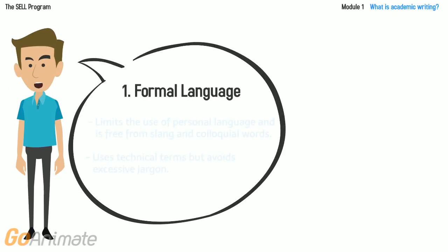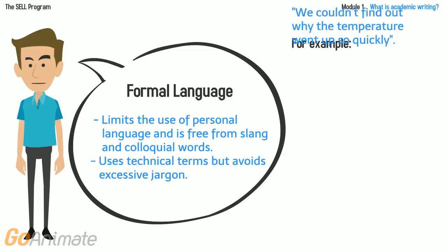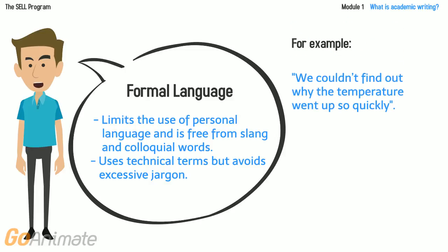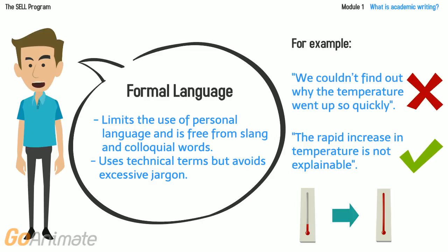Formal language limits the use of personal language and is free from slang and colloquial words. It uses technical terms but avoids excessive jargon. For example, "we couldn't find out why the temperature went up so quickly" could be written more formally as "the rapid increase in temperature is not explainable."